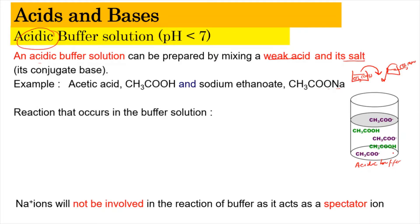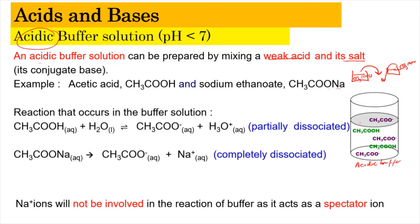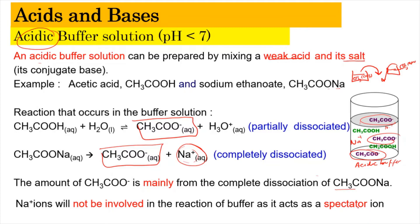Inside the buffer solution, the ethanoic acid partially dissociates in water to produce ethanoate ions (CH3COO⁻) and H3O⁺ ions, since it is a weak acid. Meanwhile, the conjugate base salt dissociates completely to produce ethanoate ions and Na⁺ ions. The CH3COO⁻ concentration is mainly from the complete dissociation of CH3COONa. The Na⁺ acts as a spectator ion and is not involved in the reaction, so we ignore it.